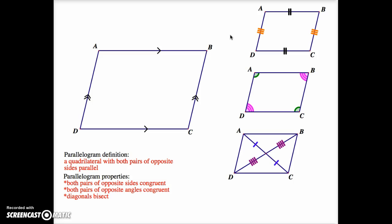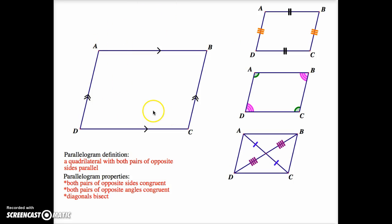The other important piece of information is that these are biconditionals. Given a quadrilateral, if you can show that the diagonals bisect each other, you have proved it's a parallelogram. If you can show that both pairs of opposite angles are congruent, you can prove it's a parallelogram. Similarly, if both pairs of opposite sides are congruent, or if both pairs of opposite sides are parallel, then it is a parallelogram.